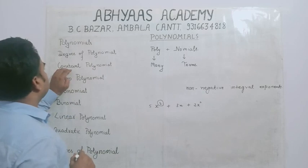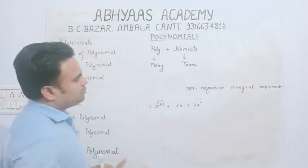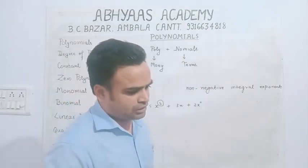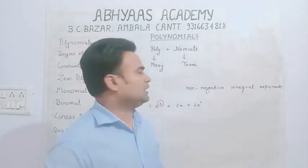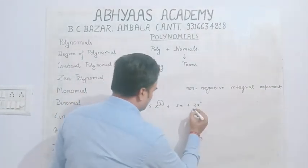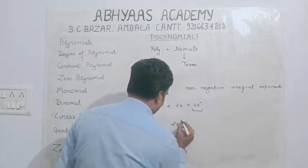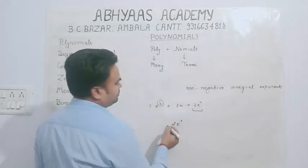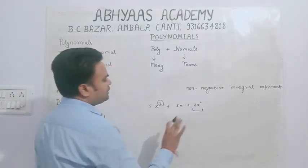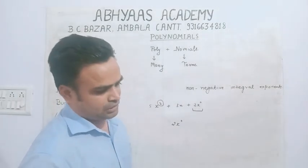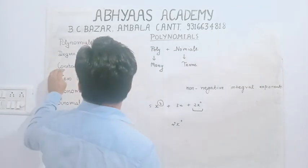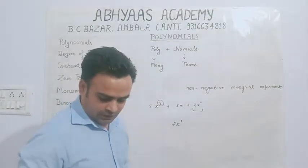Next point is constant polynomial। Constant polynomial किसको बोलते हैं? कोई भी polynomial, जिसकी degree 0 हो, उसको हम constant polynomial बोल सकते हैं। जैसे 2x to the power 0 — इस polynomial की variable की power 0 है, तो इसको constant polynomial बोल सकते हैं।